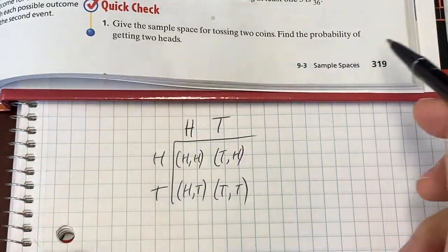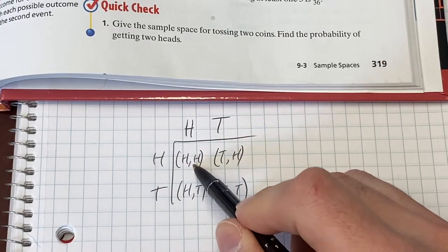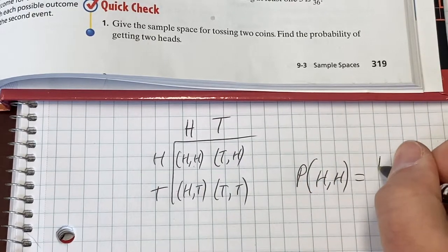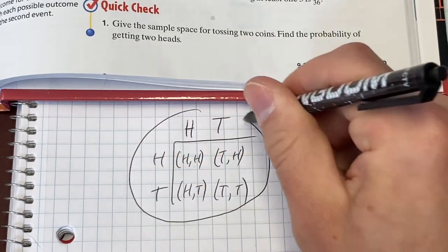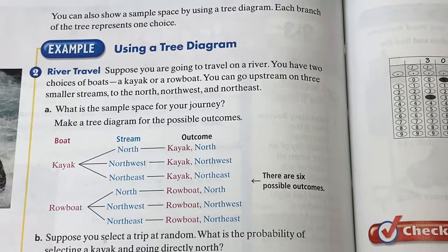What's the probability of getting two heads? How many of these four outcomes has a double heads? Only that one. Probability heads, heads, one out of four. So there's the first answer showing the sample space. There's the second answer.